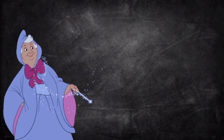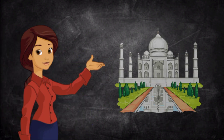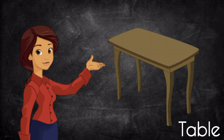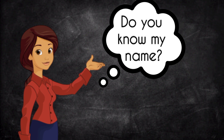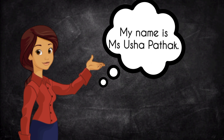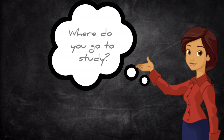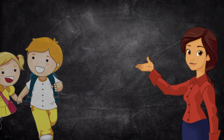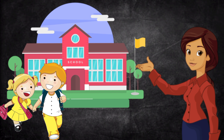The topic name is noun. Children, everything around us has a name. I have a name, you also have a name. Students, do you know my name? My name is Usha Patak — so it is a name given to a person. Children, where do you go to study? Yes, you go to school. School is a naming word used for a place.